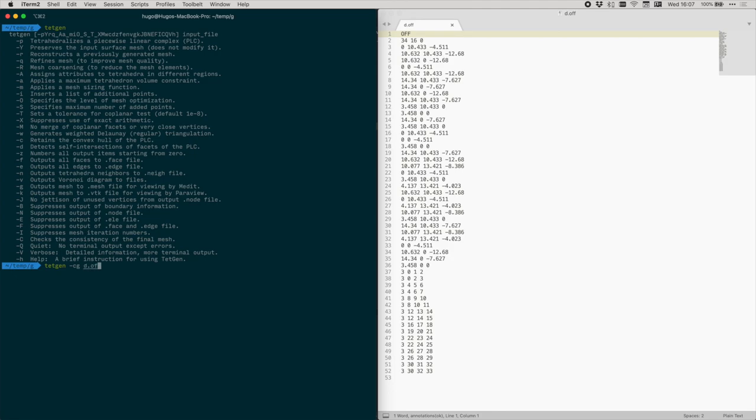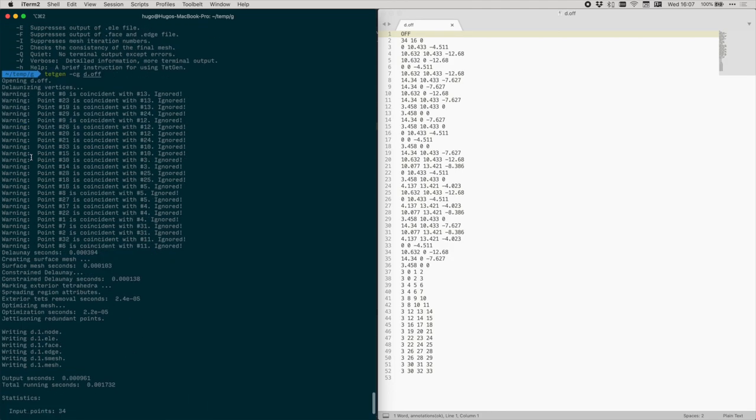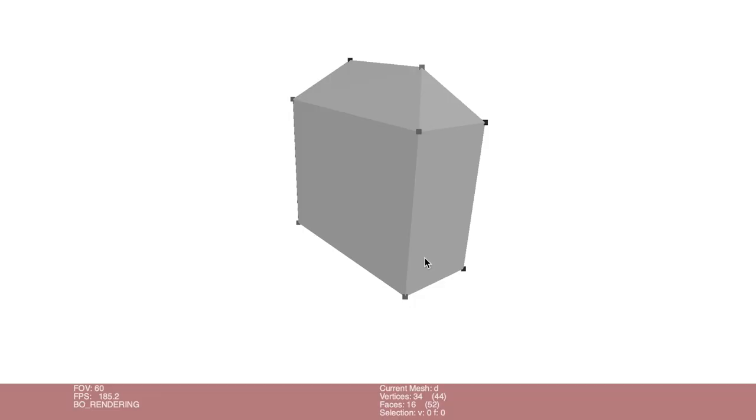I show here an example in the context of the built environment. So I took two buildings from the 3D city model of Rotterdam and I created their PLC, which is a very simple text format in the case of TetGen.